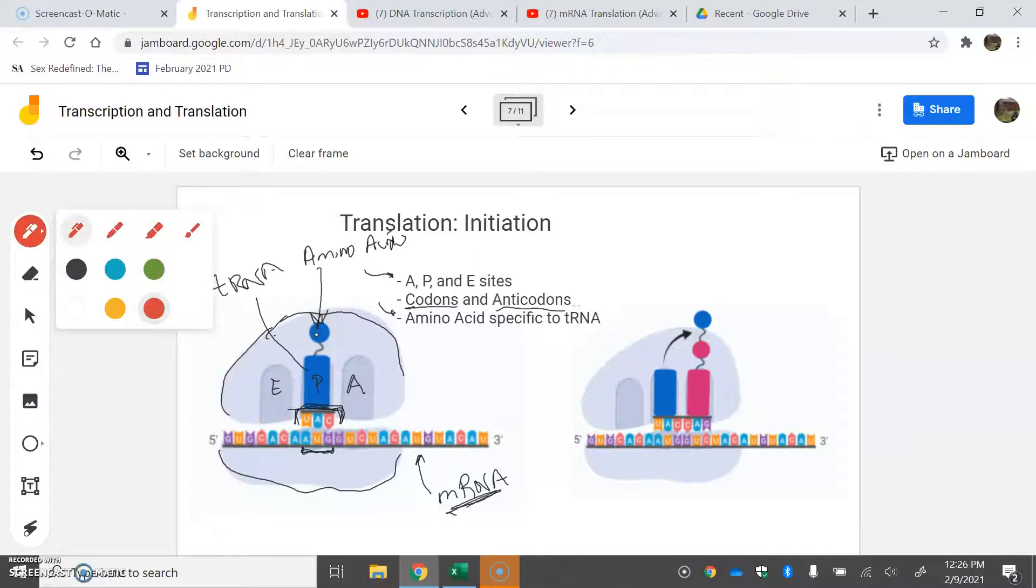On the other side of the tRNA is an amino acid. The amino acids are very specific to the tRNA. This tRNA has UAC as its anticodon and brings this very specific amino acid to the party. The next step for initiation is that another tRNA molecule is going to be out here with an anticodon for the next codon in the series.